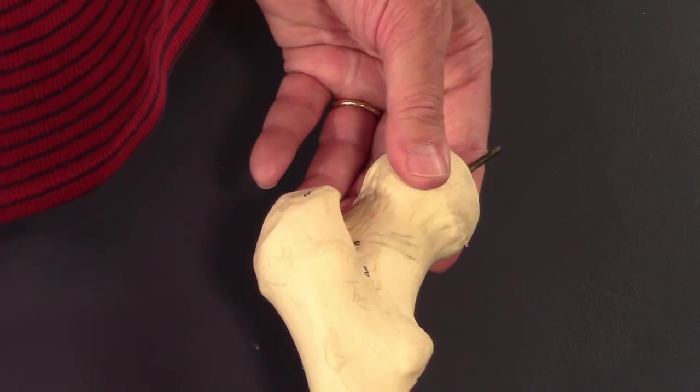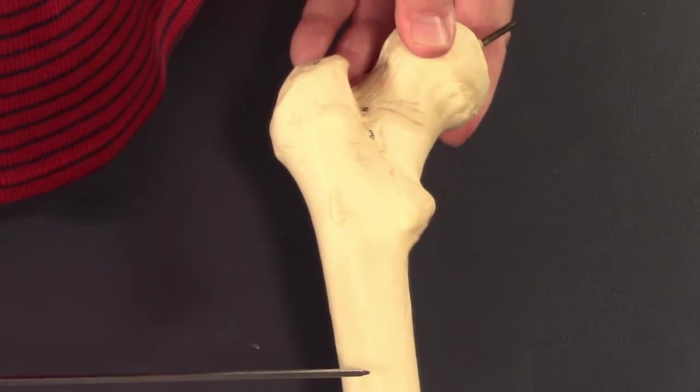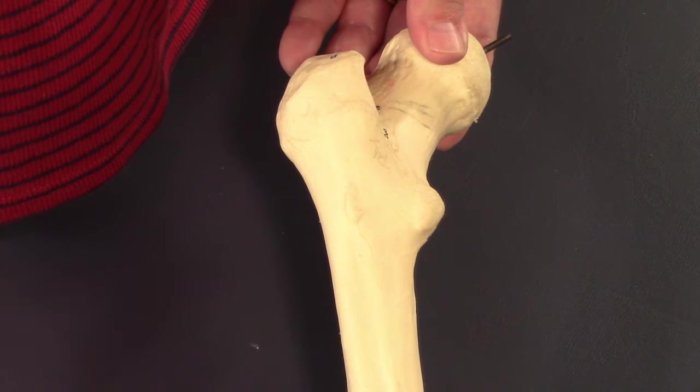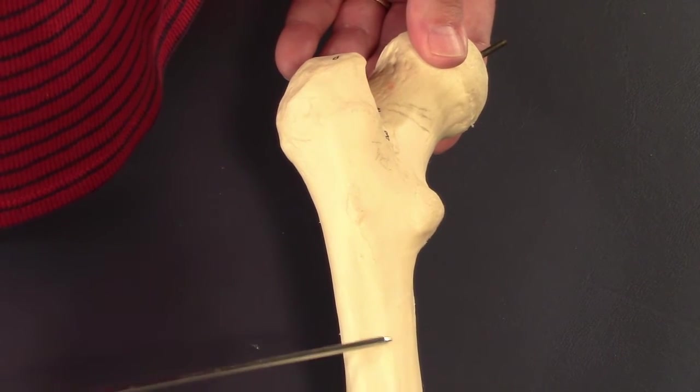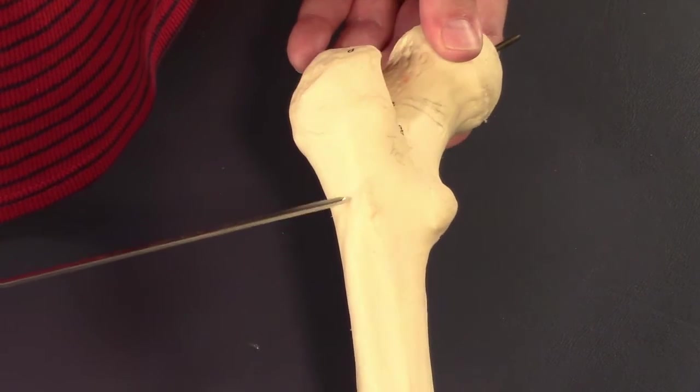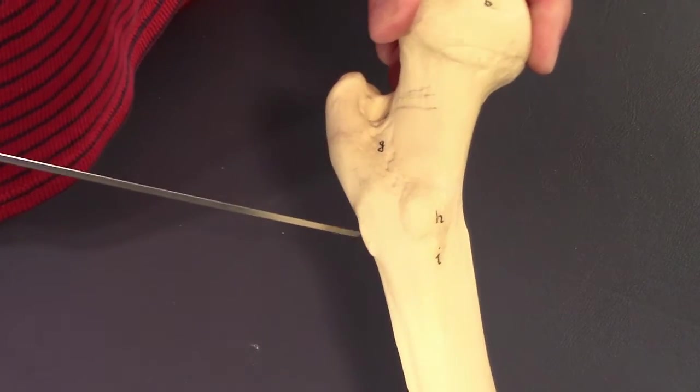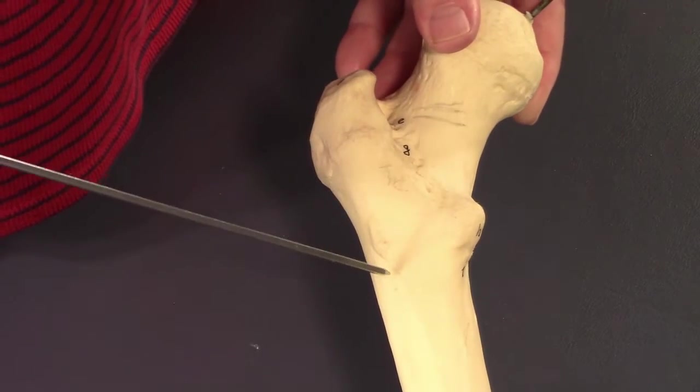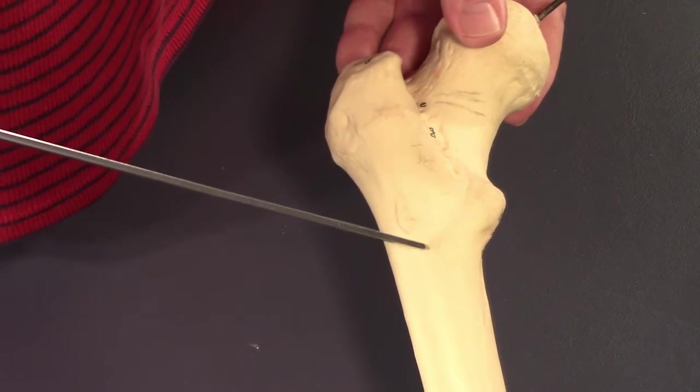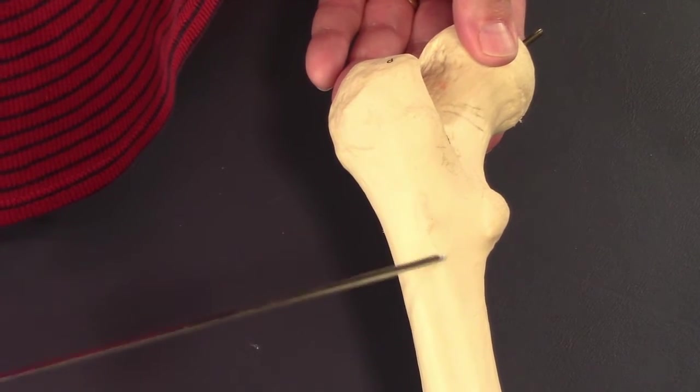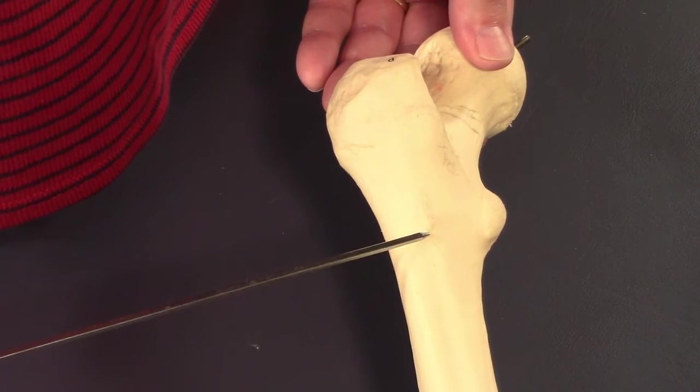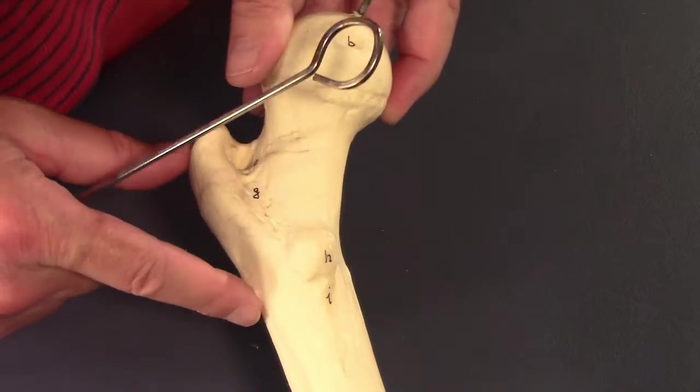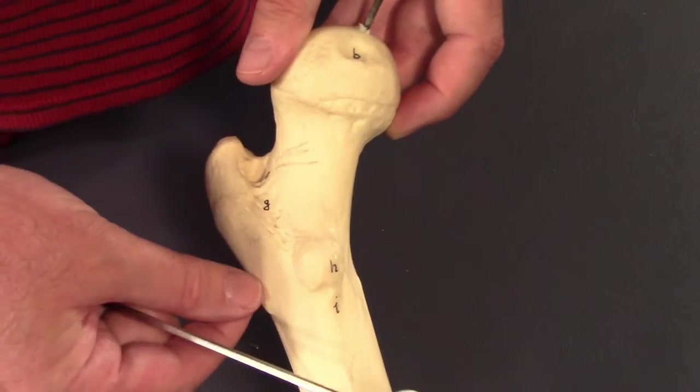Now let's go back to this lateral lip of the linea aspera. It comes here and then you get a real thickening. It's not that thick on this specimen, but you can see it here. What's that? Gluteal tuberosity, or you can call it gluteal line. Gluteus maximus inserts its tendon in there. Sometimes it's really noticeable.